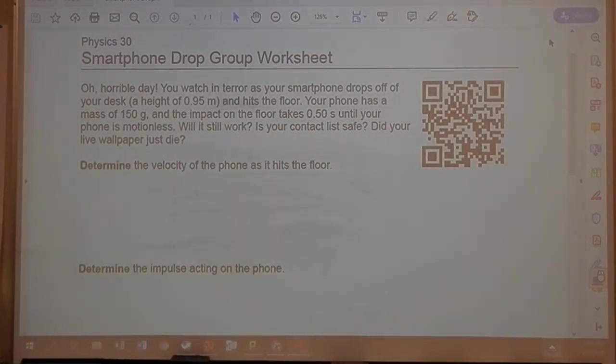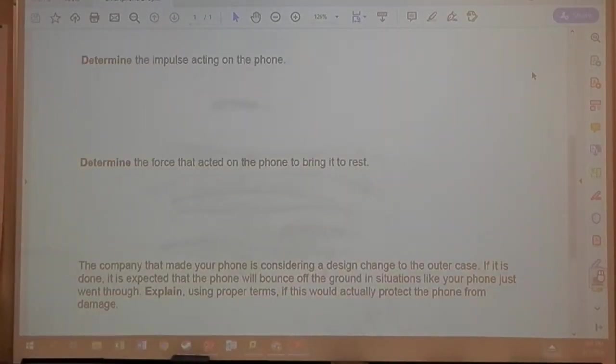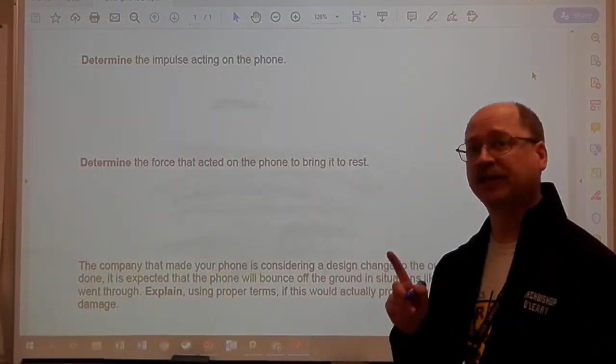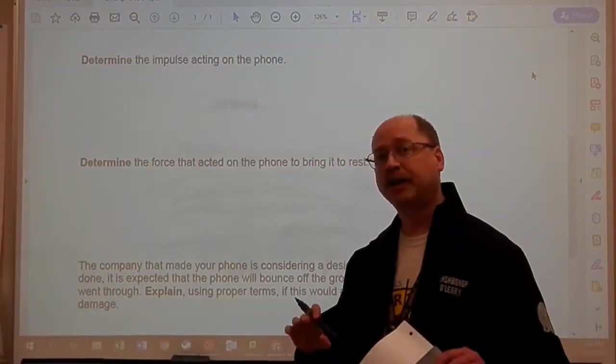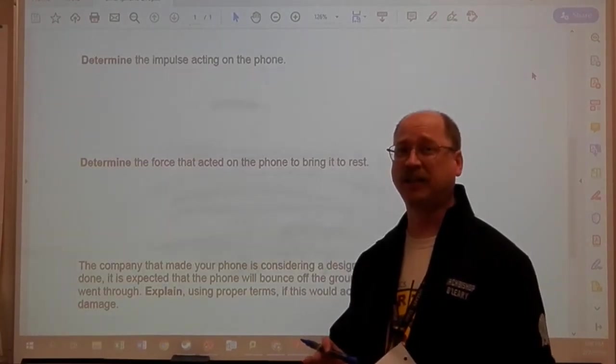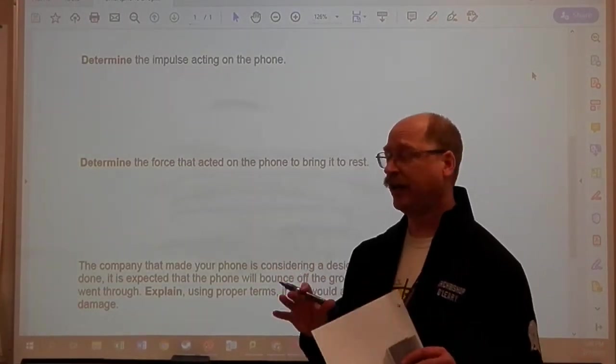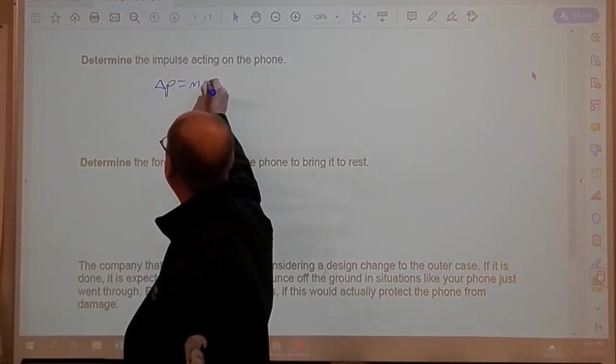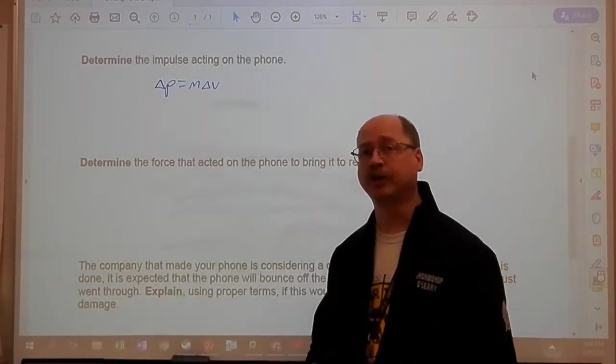This does influence how we look at our solutions and calculations in the next part where it says, determine the impulse acting on the phone. So for this, I specifically want impulse. So I have to take the F delta T equals M delta V formula, snap it in half, and specifically look at that portion of the formula because that's how I'm going to get just the impulse.